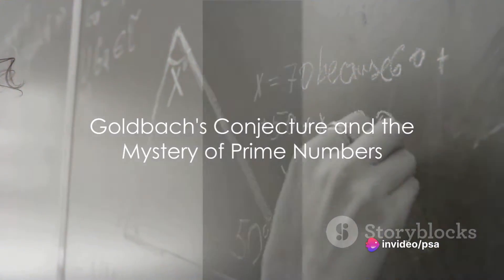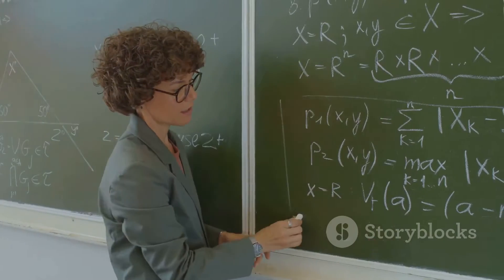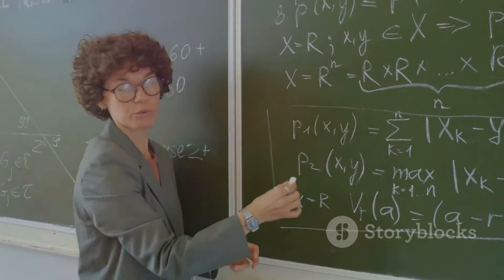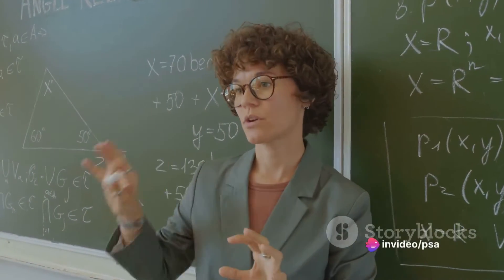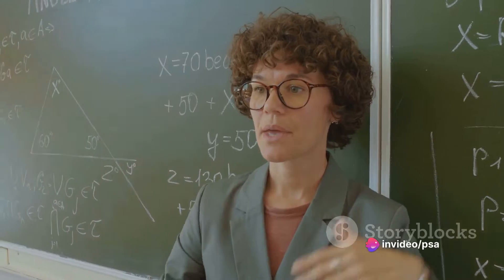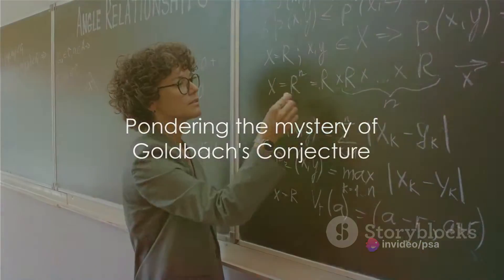Adding another layer of mystery to the enigma of prime numbers is Goldbach's conjecture. This fascinating conjecture, named after the Prussian mathematician Christian Goldbach, suggests that every even number greater than two can be expressed as the sum of two prime numbers. Yes, you heard it right. Every even number.